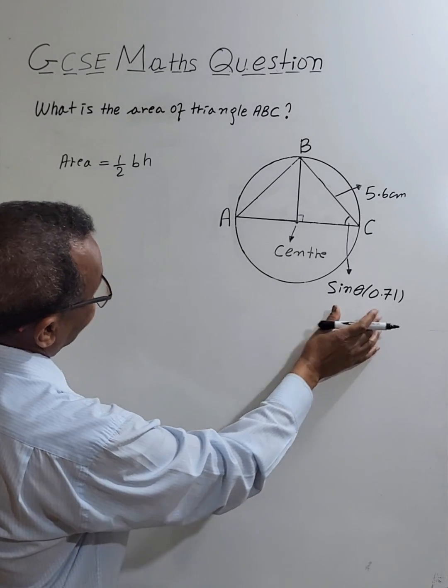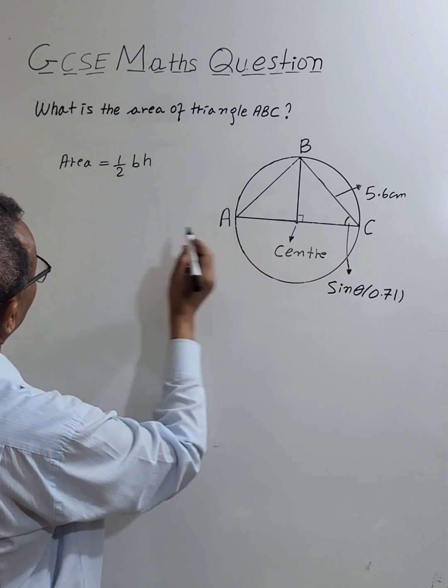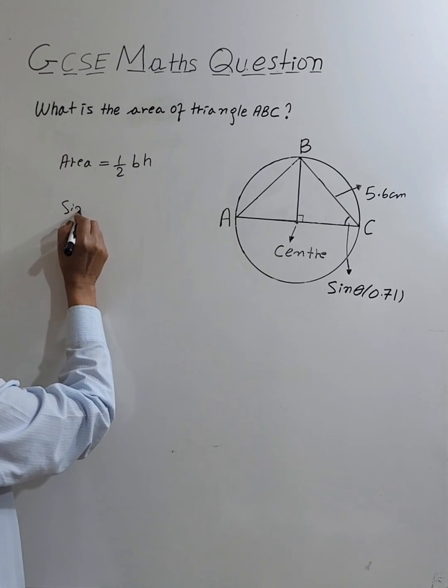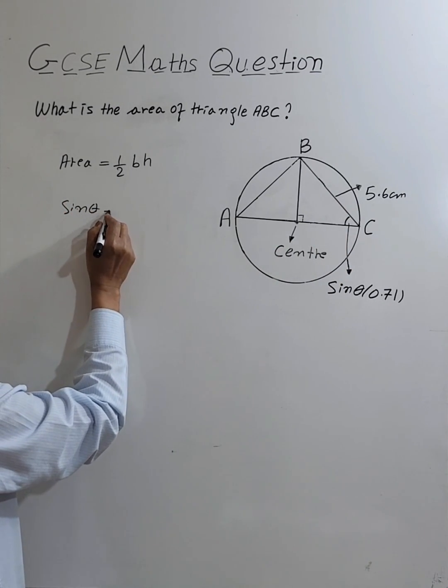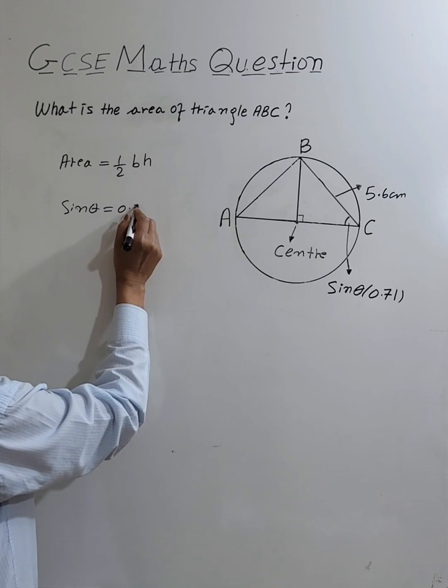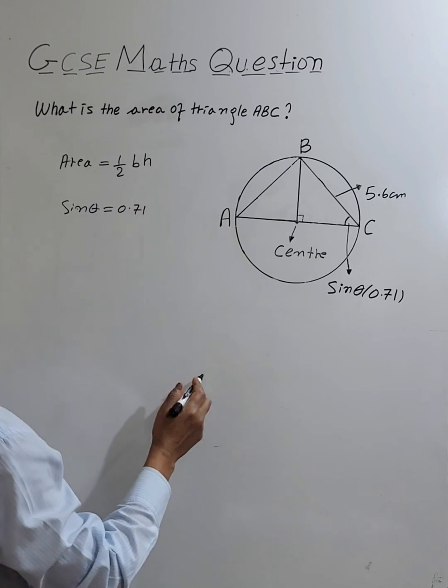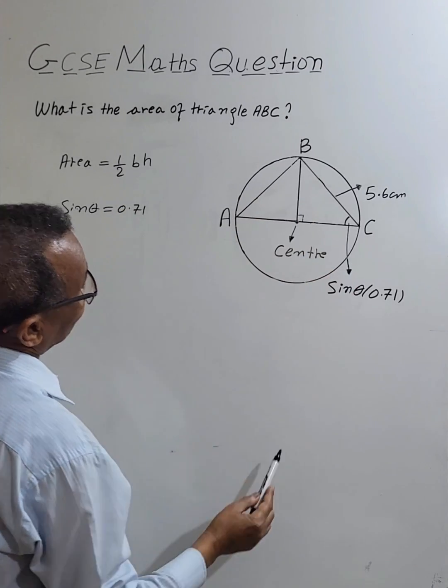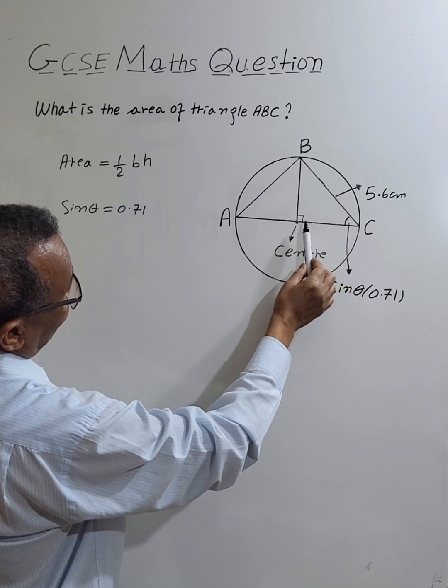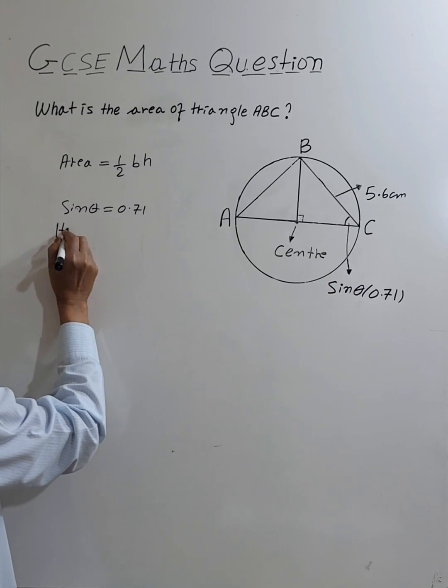The information on the triangle is sine theta, this angle, so sine theta equals 0.71. We also have this side length which is the hypotenuse of the right angle triangle. Hypotenuse equals 5.6.